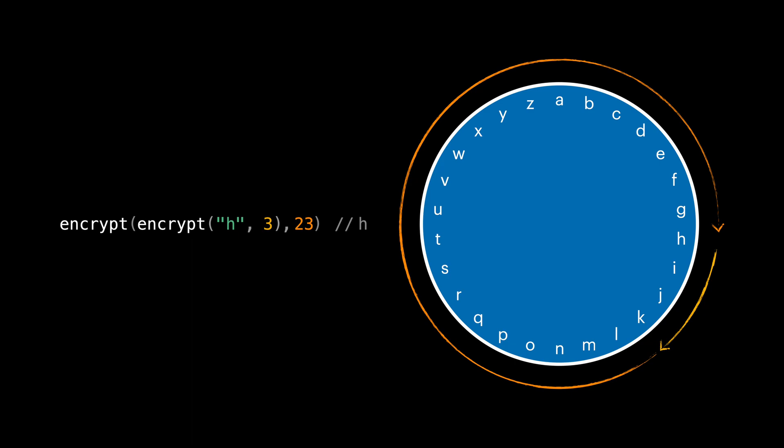Since there are only 26 items on the circle, by moving three plus 23 steps, we do a complete walk around the circle and we get back where we were initially. Let's see how many ways we can encrypt a character like h. We can simply not move at all, or shift one step, or shift two steps, or three steps, all the way to shift 25 steps.